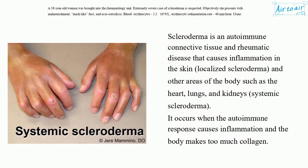Scleroderma is an autoimmune connective tissue and rheumatic disease that causes inflammation in the skin — localized scleroderma — and other areas of the body such as the heart, lungs, and kidneys — systemic scleroderma. It occurs when the autoimmune response causes inflammation in the body and makes too much collagen.